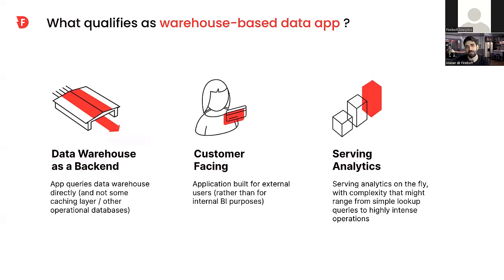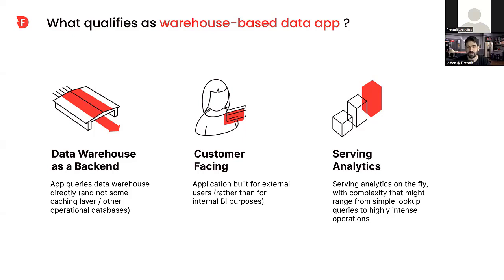Before we talk about the real optimization techniques, let's talk about what qualifies as a warehouse-based data application. The first thing is that we're using a data warehouse as a backend for our data applications, as opposed to cases where someone would use a caching layer or some other operational database. This is usually a relational column-based data warehouse for analytical purposes, serving as the backend for analytical requests as part of the data application.